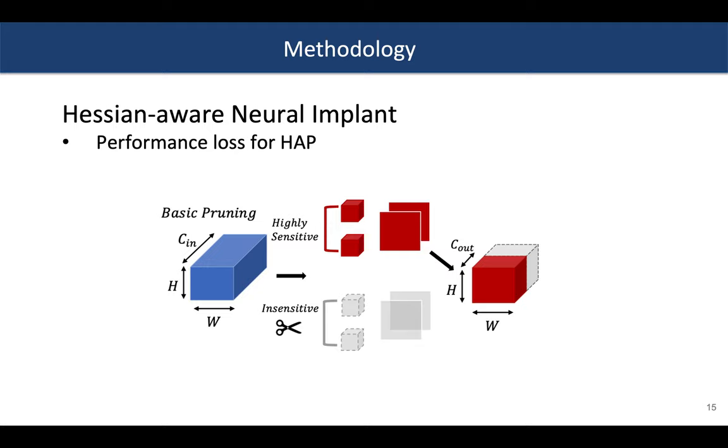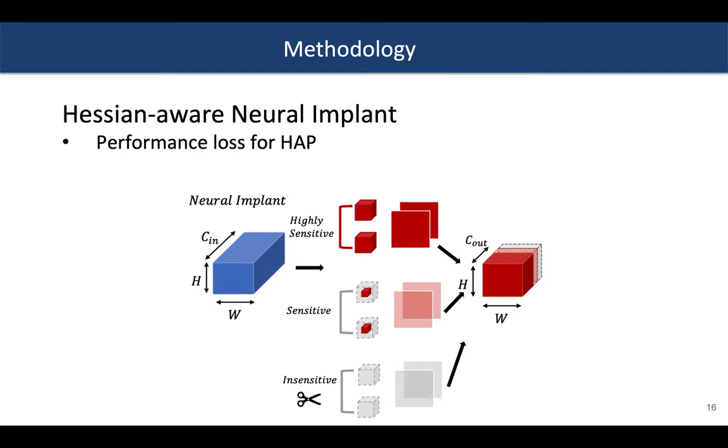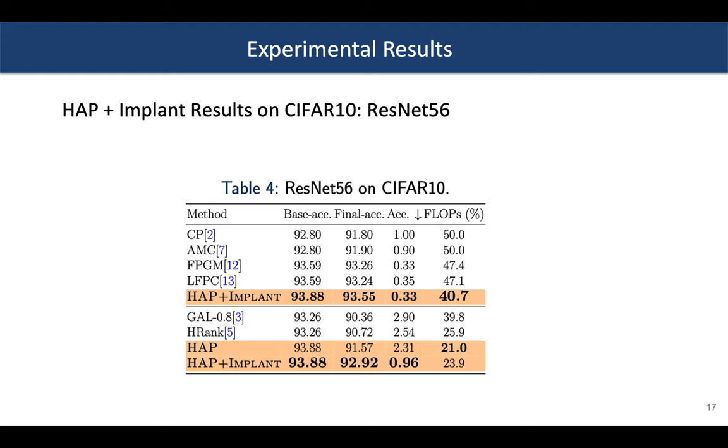We found that a better approach is to avoid entirely pruning these sensitive channels and instead add a pointwise convolution as a neural implant. This allows some information to flow through these relatively sensitive channels with less parameters. We can see that HAP with neural implant has a significantly better performance increase in this example, suffering from only 0.96 percentage point accuracy drop with similar number of FLOPs.